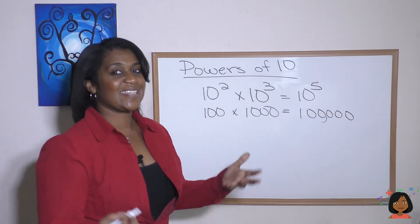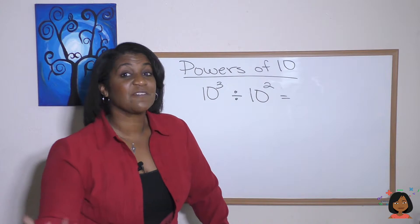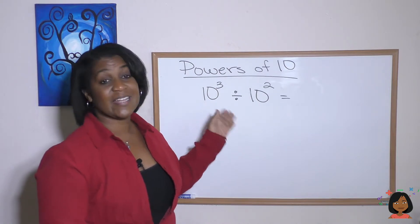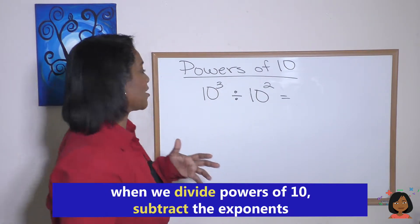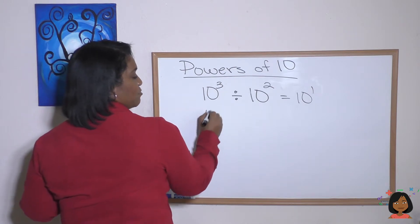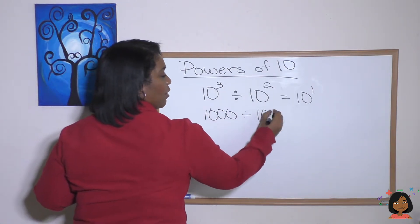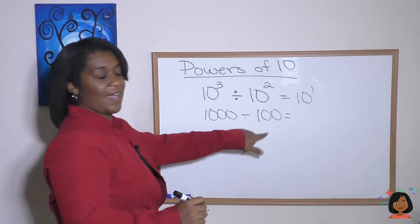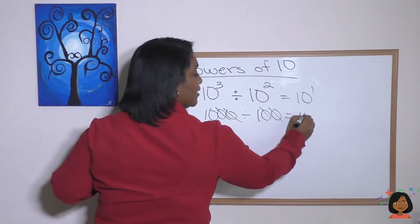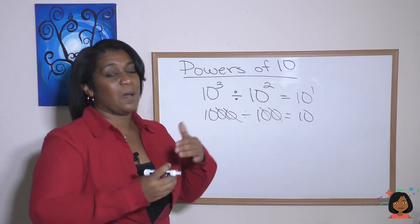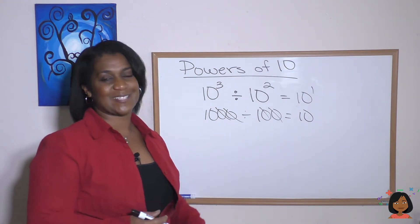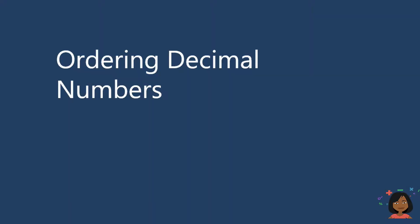It only makes sense that a similar kind of thinking would work for dividing powers of 10. So we're going to divide 10 to the third by 10 to the second. All we have to do is subtract our exponents: three minus two is one, which is 10 to the first power. Let's take a look at what that means. This one has three zeros divided by two zeros. Well, 1,000 divided by 100, we know we can just cross out zeros to see what's left. All we have left is 10, and 10 to the first is 10. So the rule: when multiplying powers of 10, add the exponents. When dividing powers of 10, subtract the exponents.